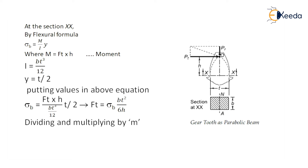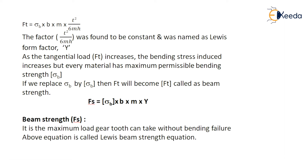By substituting all values, we get sigma B as FT into H divided by (BT cubed by 12) multiplied by (T by 2), which gives FT as sigma B into BT squared upon 6H. Dividing and multiplying by module M, we get FT as sigma B into B multiplied by M into T squared divided by 6MH. The factor T squared upon 6MH was found to be constant and was named as Lewis's form factor, represented by capital Y.